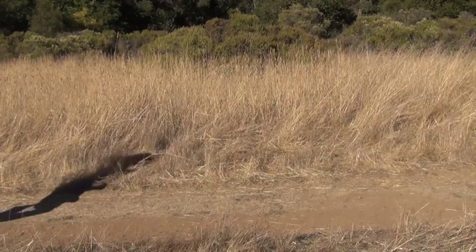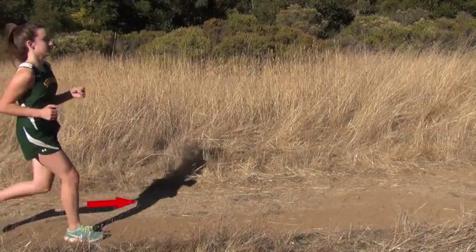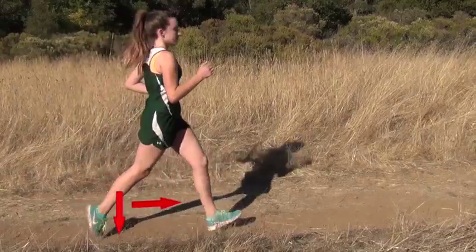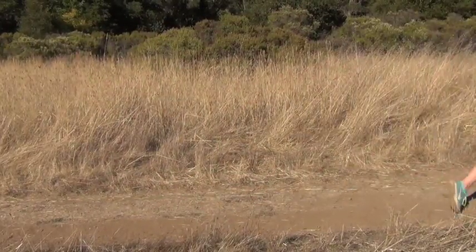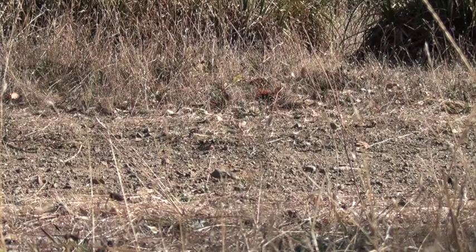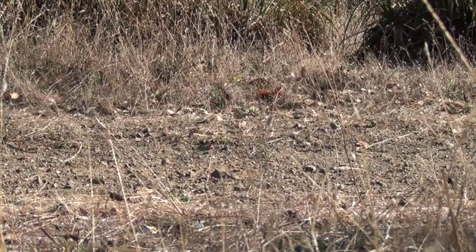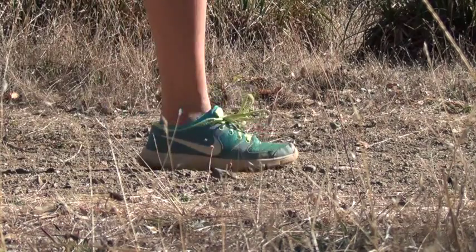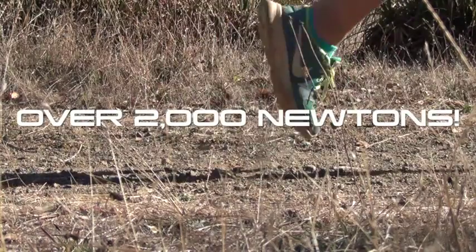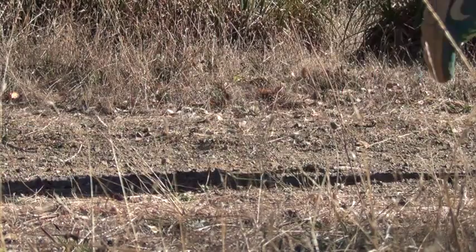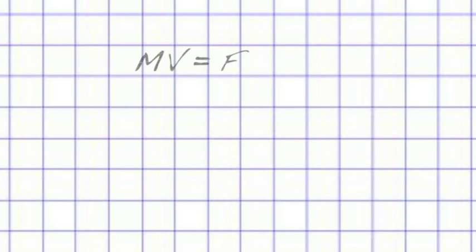To begin with, when you swing your foot forward and down, the force you exert on the ground plays a major role in your stance and speed while running. Much force is exerted when your foot hits the ground. We calculated the force this runner exerts on the ground to over 2,000 newtons. We easily calculated this using the equation mass times velocity is equal to force times time.